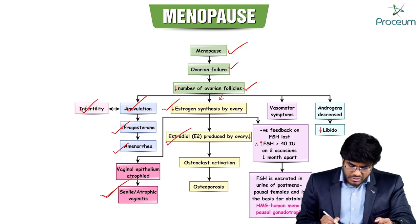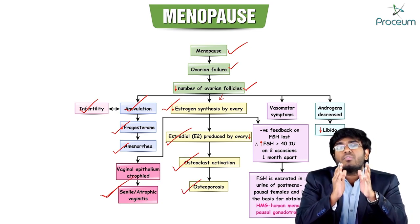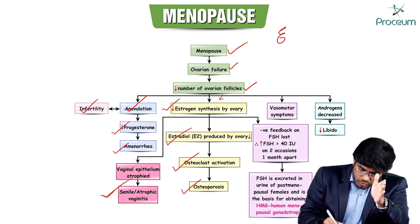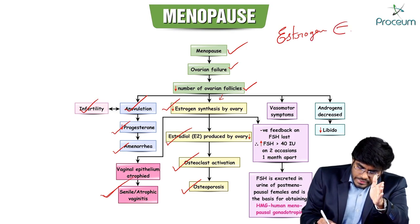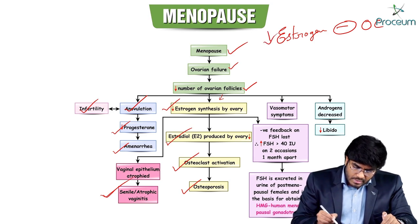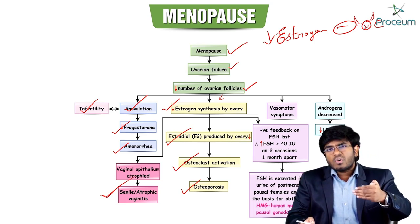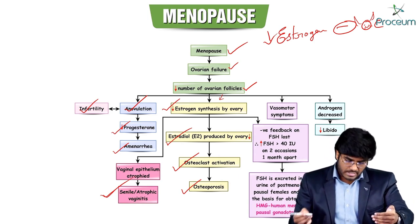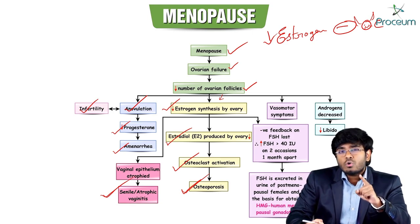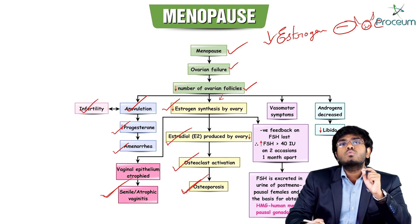With no estradiol production from the ovary, osteoclast activation occurs, leading to osteoporosis. Normally, estrogens inhibit osteoclasts. During menopause, with decreased estrogens, osteoclasts are activated and aggressively resorb bone, causing porous bones — osteoporosis. With no estrogen and progesterone, FSH and LH values become very high.